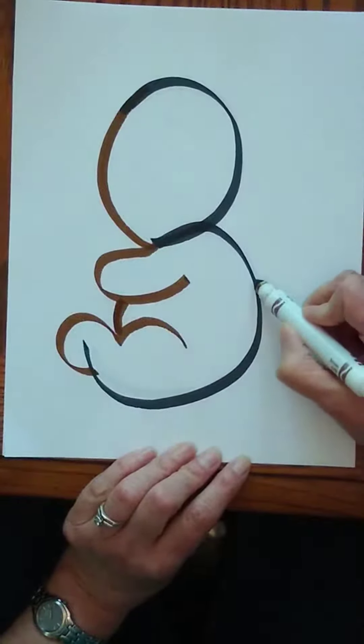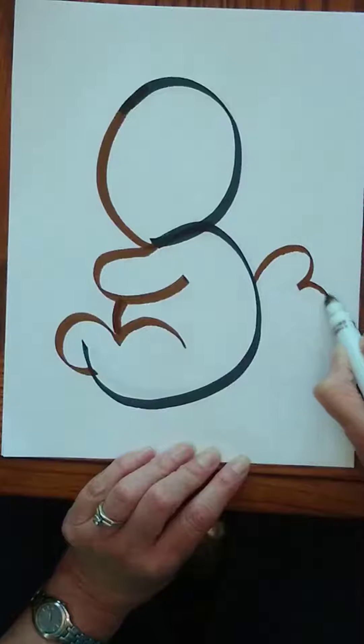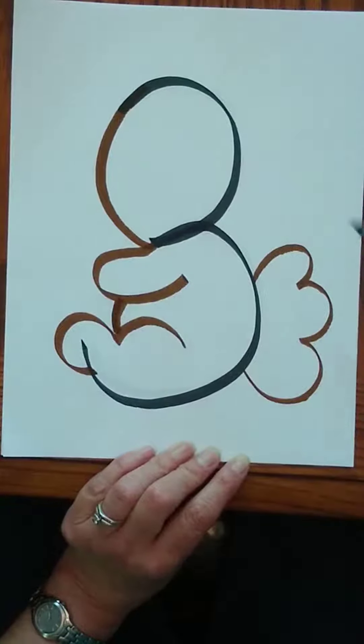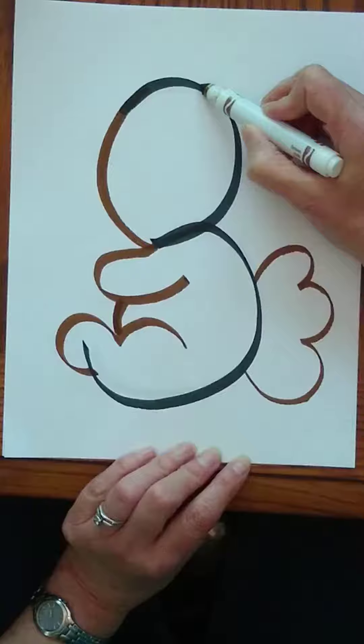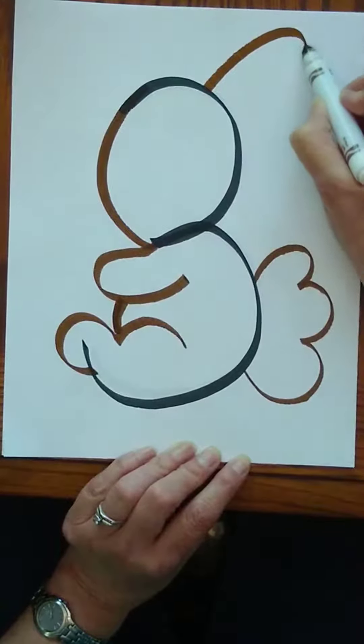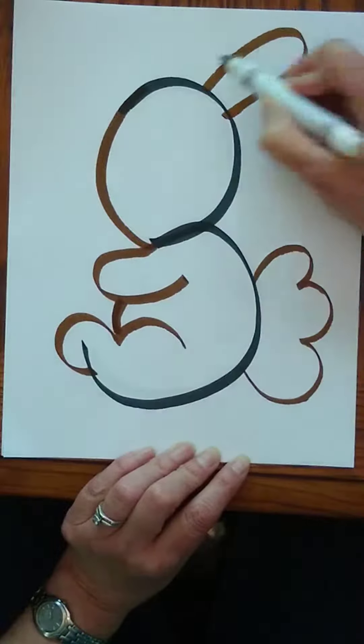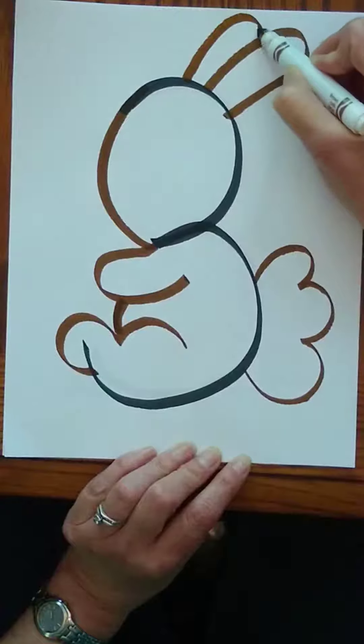And now some of the more fun details. Give him a fluffy cotton tail, kind of bumpy. Give him some ears. Out and back for one ear. Give him a second ear.